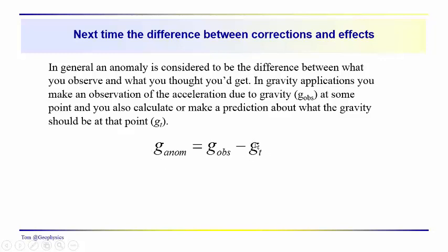Well, notice that when we make this subtraction here, we're going to reverse all the signs and all the effects. So the free air effect, instead of being negative, is going to be positive. The Bouguer plate term will be negative instead of positive, and so on. So we'll talk more about that next time. And thanks for joining us. See you on the next video.